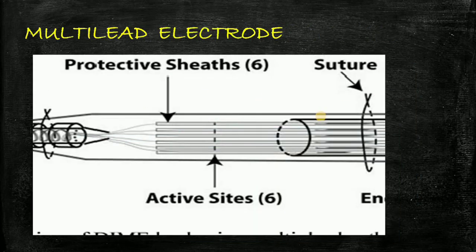Now last is multi lead electrode. This electrode consists of a common steel cannula which comprises of at least three insulated electrodes at regular intervals inside it. You can see in this picture there is a multi lead electrode in which there are three insulated electrodes present.